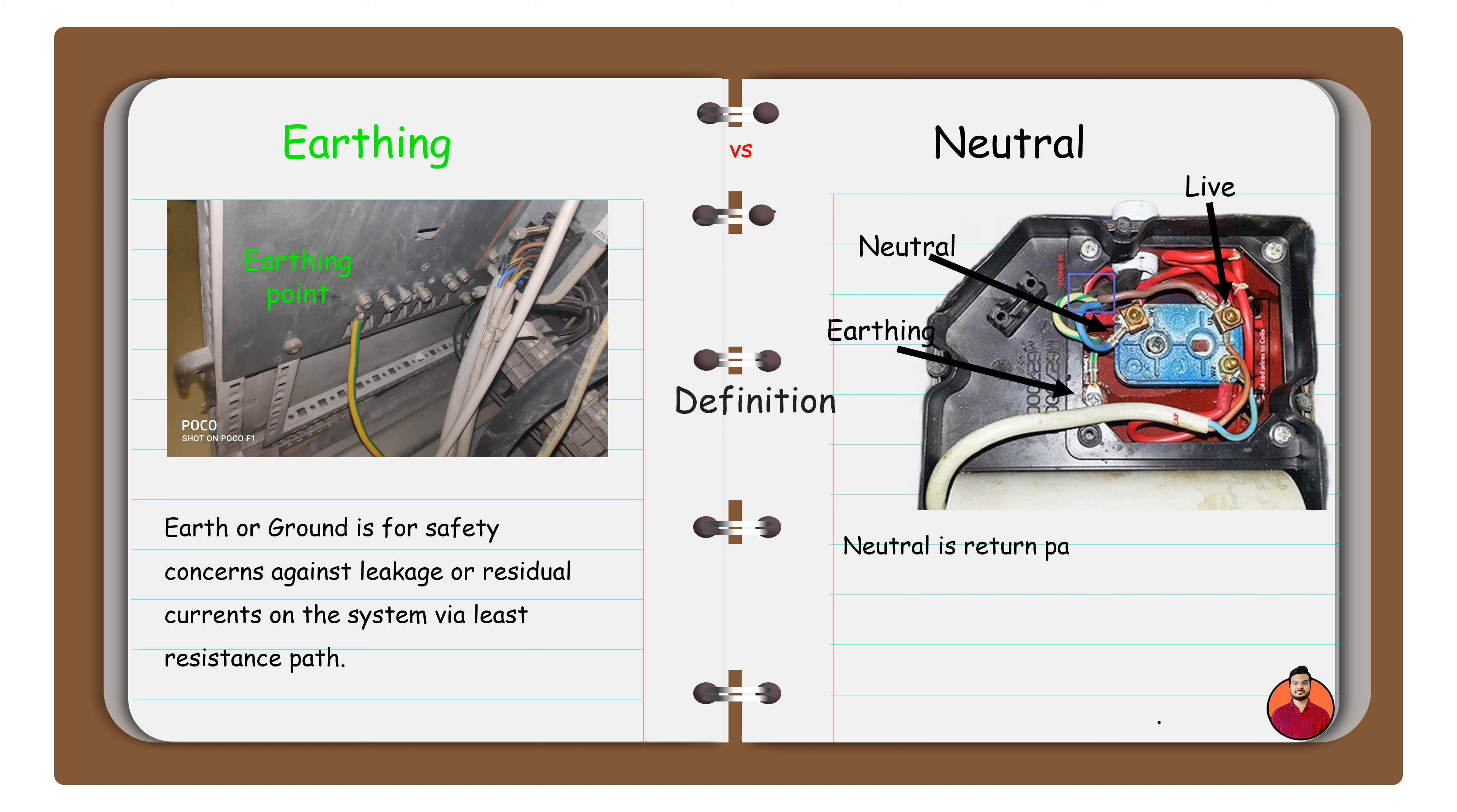Neutral is return path for an AC circuit, which is supposed to carry current in normal condition. This current may be because of many reasons, primarily because of phase current imbalance.